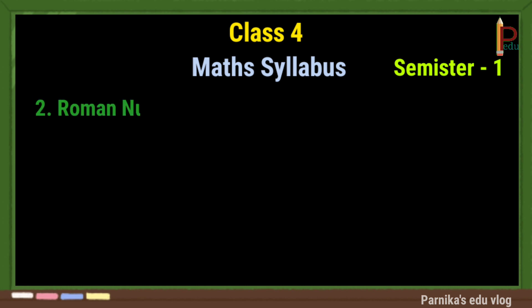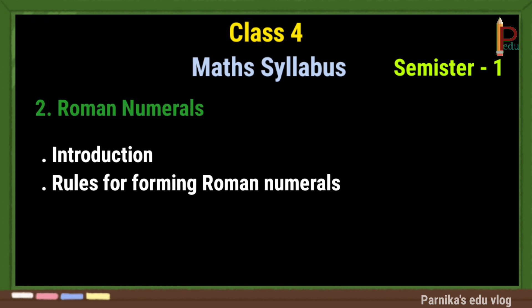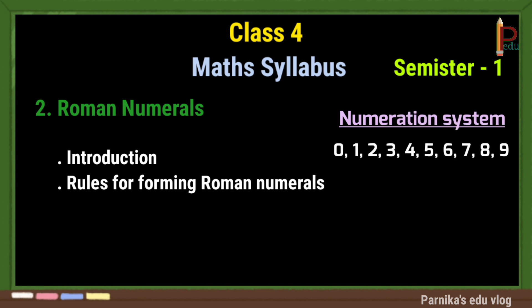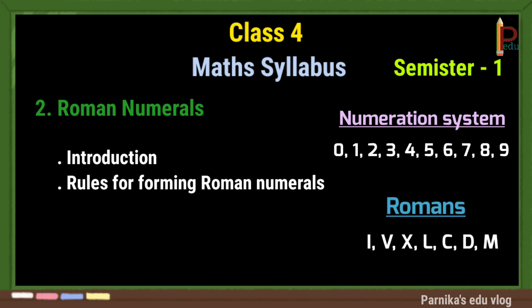The next chapter is Roman Numerals. In this, we have an introduction, followed by rules for forming Roman numerals. In our numeration system, we use digits 0 to 9, whereas in the Roman system, we use 7 basic symbols.